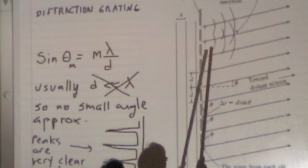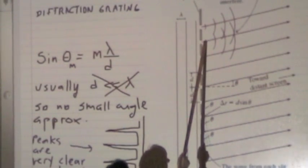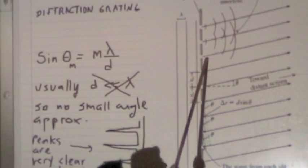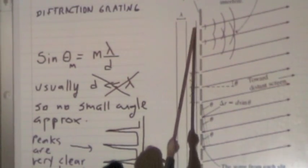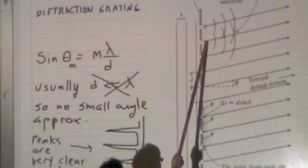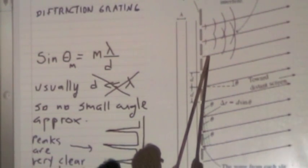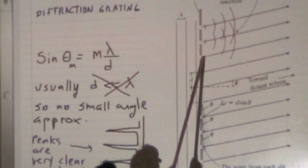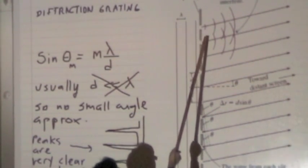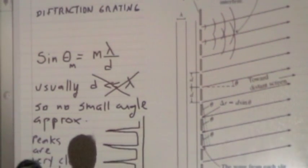But because the difference in phase between this one and this one is a multiple of 2π, the difference between this one and this one is again going to be a multiple of 2π. Because the geometry is exactly the same. So constructive interference between these two waves means that there is constructive interference with every wave coming out of those slits.